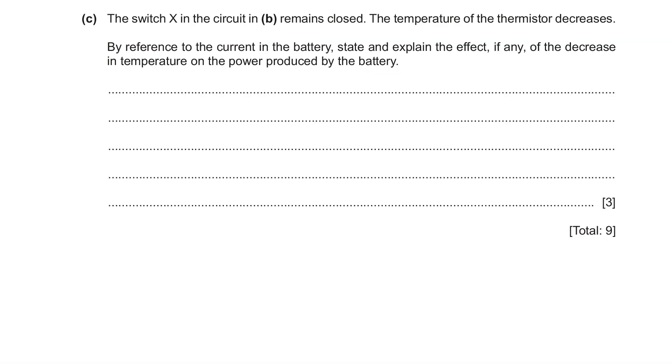Part C: The switch X in the circuit in part B remains closed. The temperature of the thermistor decreases. By reference to the current in the battery, state and explain the effect, if any, of the decrease in temperature on the power produced by the battery.